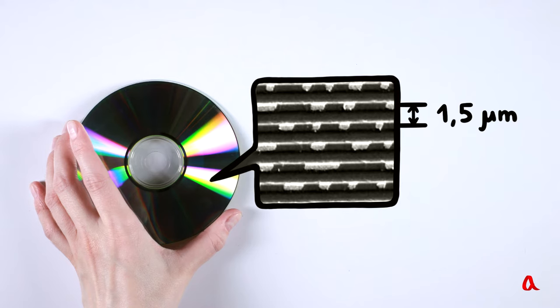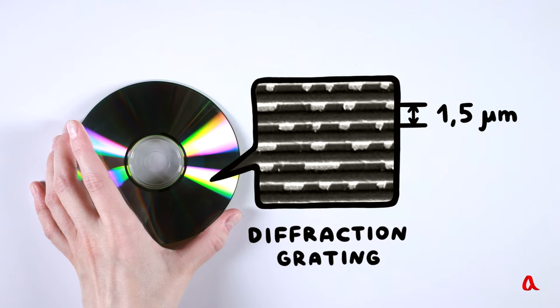In optics, such a device with parallel strokes is called a diffraction grating, and the step between the strokes is the grating period.